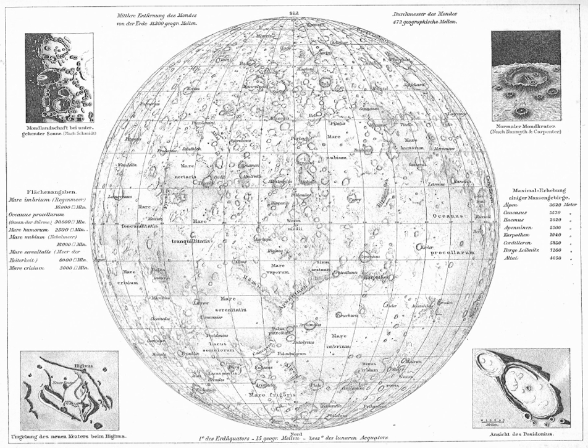Geological features on Triton should be assigned aquatic names, excluding those which are Roman and Greek in origin. Possible themes for individual descriptor terms include worldwide aquatic spirits, famous terrestrial fountains or fountain locations, terrestrial aquatic features, famous terrestrial geysers or geyser locations, and terrestrial islands.